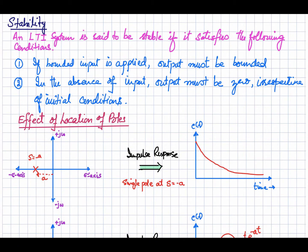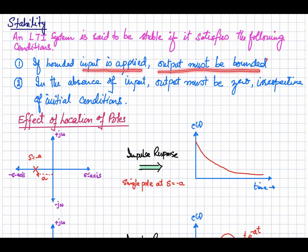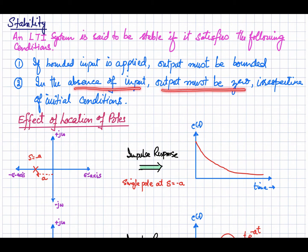In this video we are going to discuss the stability of a system. An LTI system is said to be stable if it satisfies the following conditions: if a bounded input is applied, the output must be bounded — meaning its maximum and minimum value must be finite. If the maximum value of the system output is finite, the system is stable. Secondly, in the absence of input, the output must be zero irrespective of initial conditions.